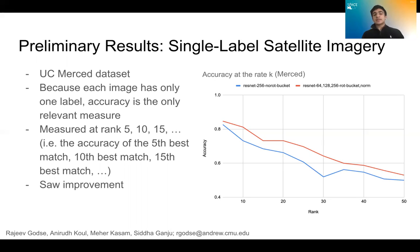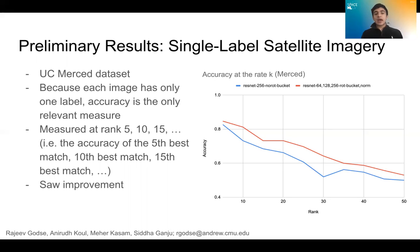Even though this dataset was a single-label dataset — which limited our ability to outperform standard search and generate a metric more meaningful than accuracy — it did demonstrate our ability to produce some benefit at all ranks for actual satellite images. The graph displays accuracy at each rank, showing the probability that the Xth best match found by the pipeline would match the category of the query image. This was the first measure of success.